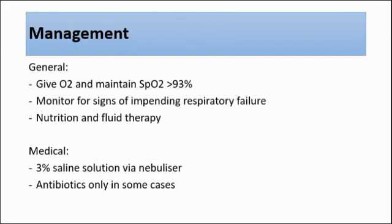For management, we can give oxygen and also maintain the oxygen saturation level more than 93%. Besides that, we have to monitor for signs of impending respiratory failure — such as if the infant is unable to maintain satisfactory SpO2 on inspired oxygen more than 40%, or if there is rising partial pressure of carbon dioxide, this means impending respiratory failure. Other management is nutrition and fluid therapy; poor feeding is commonly seen in infants with bronchiolitis, so if they cannot tolerate oral feeding, we can give nasogastric tube feeding.